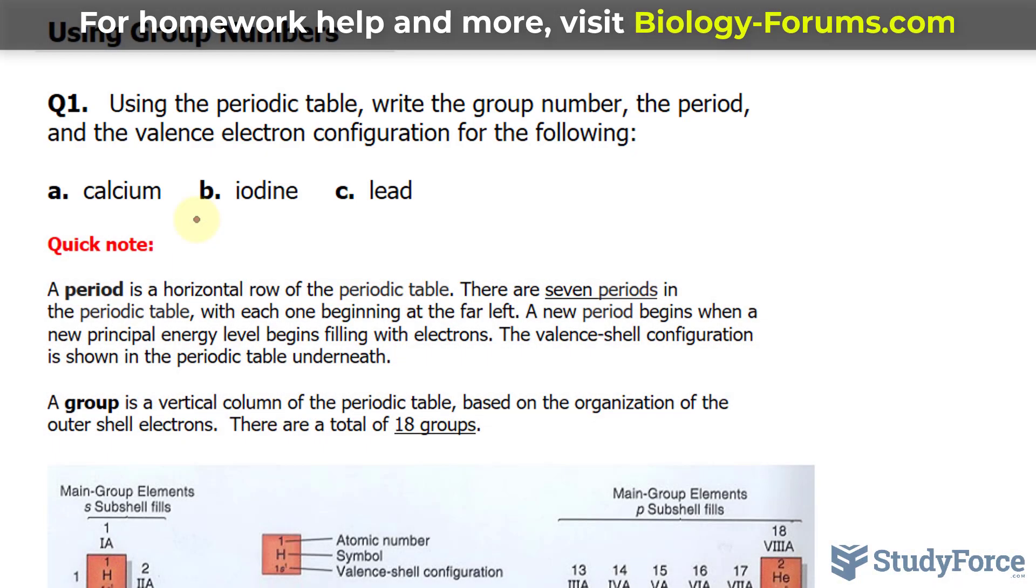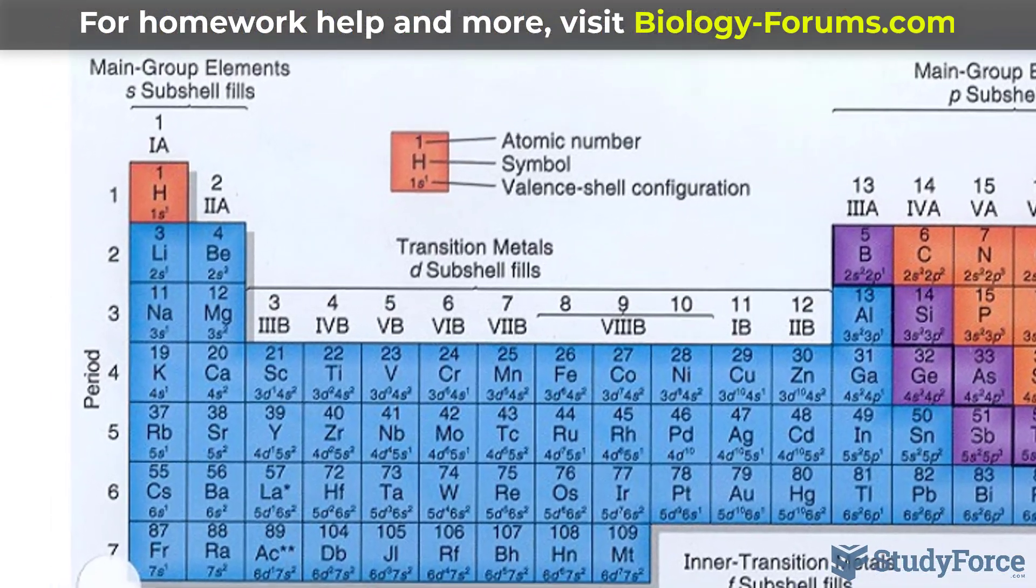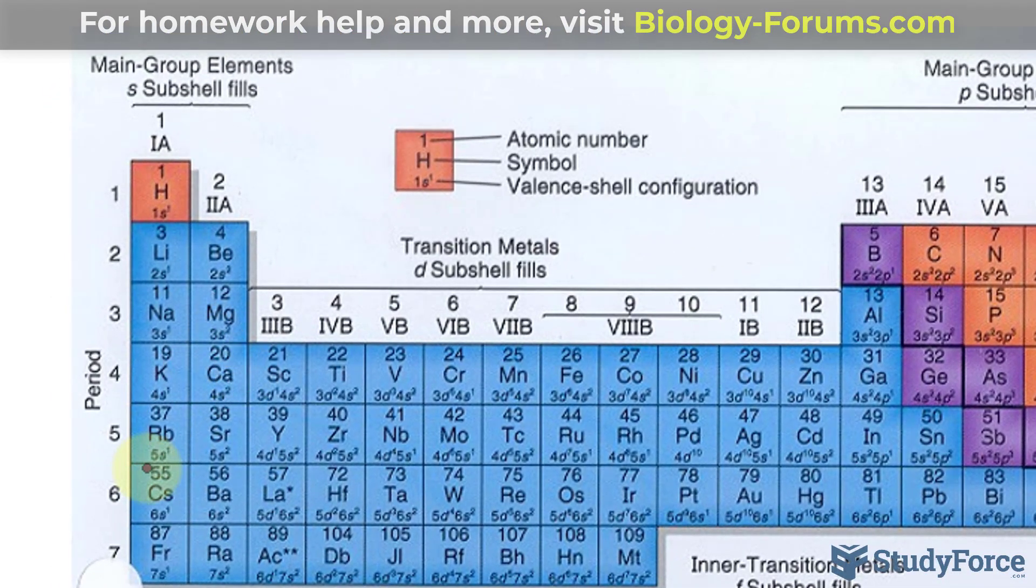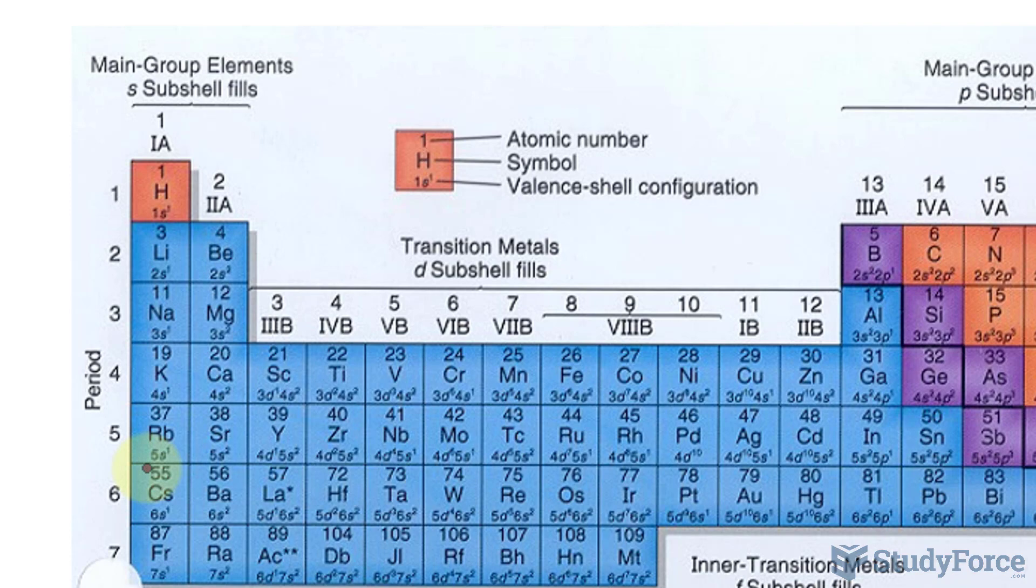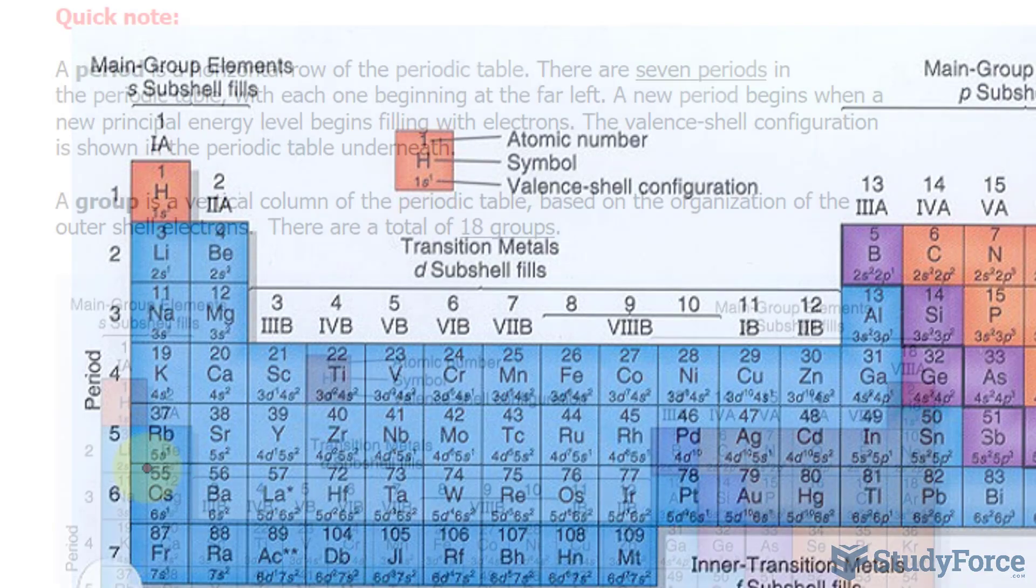Let's first locate where calcium is on the periodic table. As you can see, calcium is the 20th element on the periodic table. This means that it has 20 protons and 20 electrons.